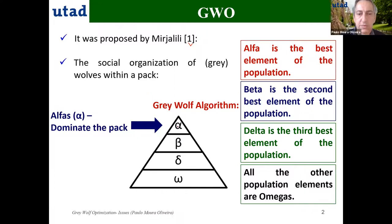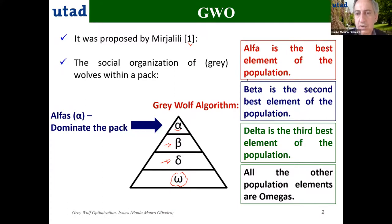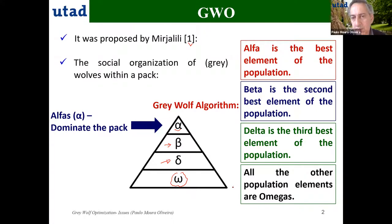In the wolf pack, the alpha wolves are the dominant wolves, the second in command are the betas, the third in command are the deltas, and all the other ones are omegas. The analogy with the GWO algorithm is that the best element in a population is the alpha wolf, the second best is the beta, the third best is the delta, and all the other elements are omegas. All population movements are determined by the positions of alpha, beta, and delta.